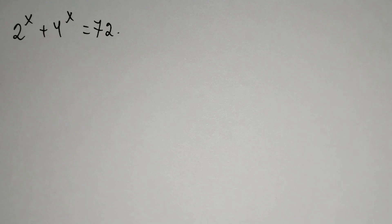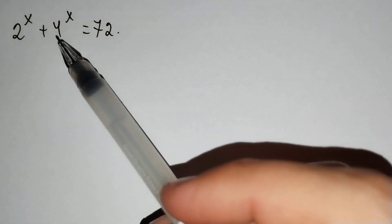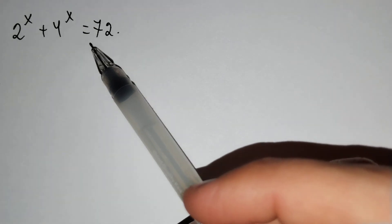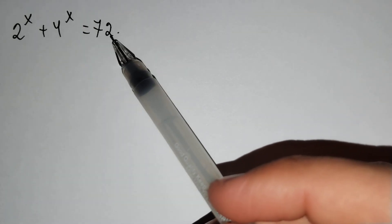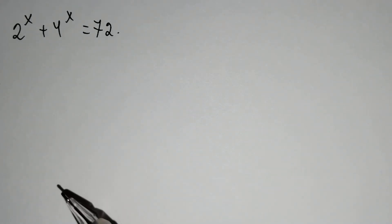Hi everyone. In this video, we will solve this problem: 2^x + 4^x = 72. How should we solve this problem?